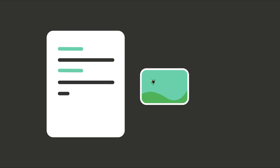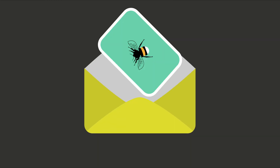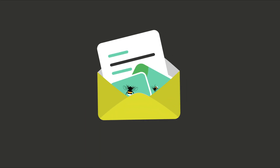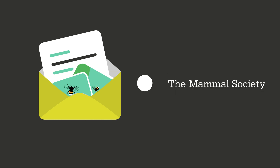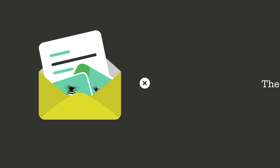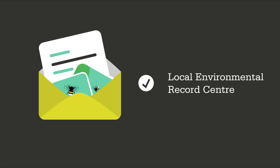If you've gathered data on species as part of a national monitoring scheme or survey, then it's best to send the information straight to the organisation involved. If your record doesn't quite fit into a survey, the next best place to send it is your local environmental records centre.